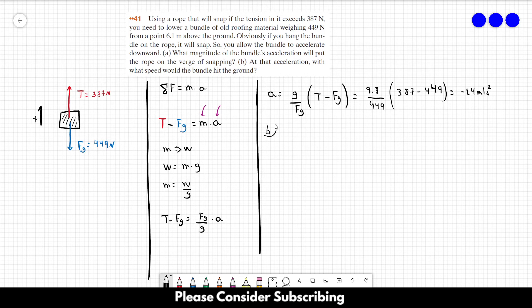Letter B, at that acceleration, with what speed would the bundle hit the ground? So since the acceleration is constant, we can use this equation. V squared is equal to V0 squared plus 2 times A delta X or delta Y. You can choose the letter that you want to use. We want to find the final velocity.